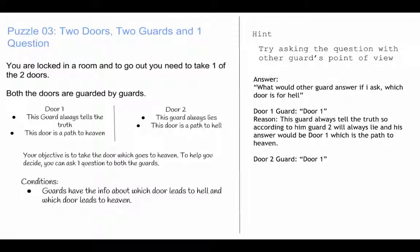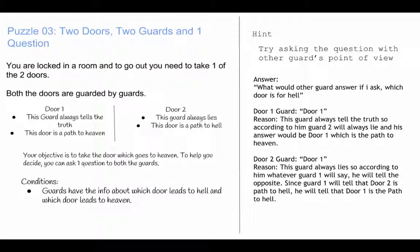If you ask the same question to guard two, his answer will be door one. Reason: This guard always lies. So according to him, whatever guard one will say, he will tell the opposite. Since guard one will tell that door two is path to hell, he will tell that door one is the path to hell. So take the door one and you are in heaven.